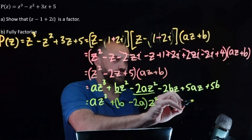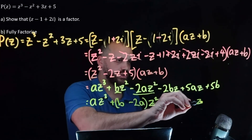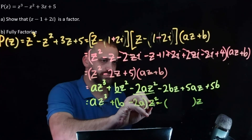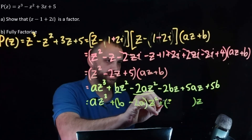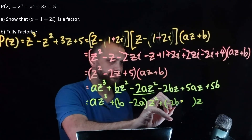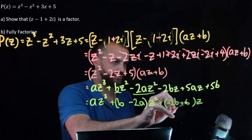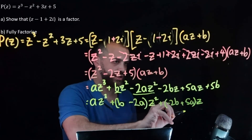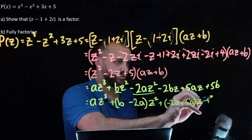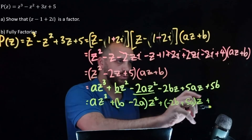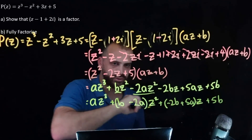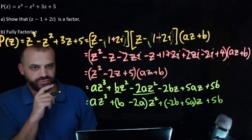We've got a linear term: negative 2b plus 5a times z. And finally we have a constant term: 5b.